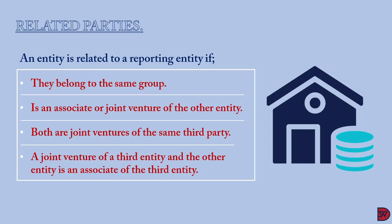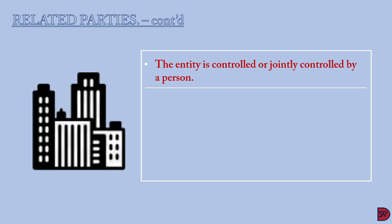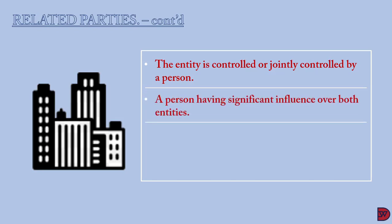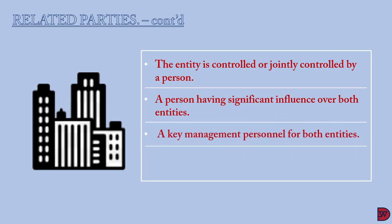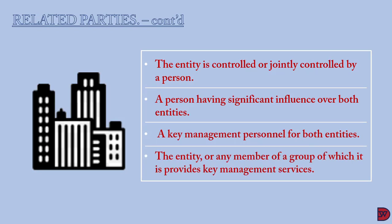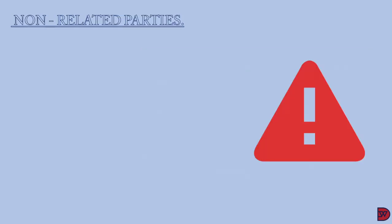If Entity A and Entity B are joint ventures of an institution, and Entity C is an associate of Entity B, then Entity C becomes a related party to Entity A. Additionally, if both entities have been controlled by a single person they become related parties. The same applies where an individual does not control but has significant influence over both parties. If they share key management personnel, they are also related. Finally, if Entity A provides key management services to Entity C, and Entity B and Entity C belong to the same group, then Entity A and Entity B become related parties.